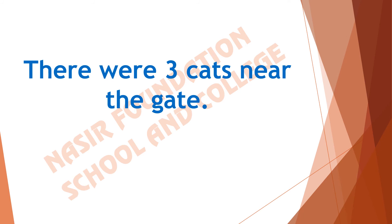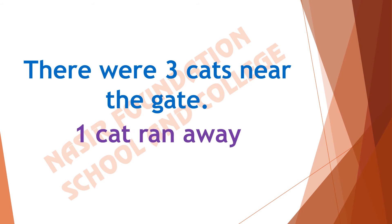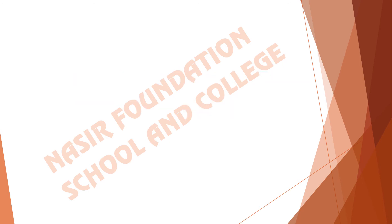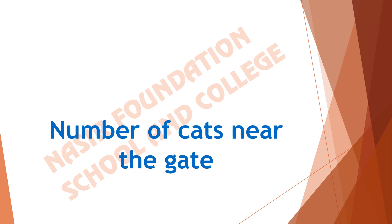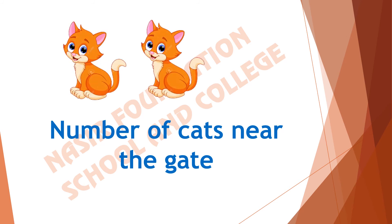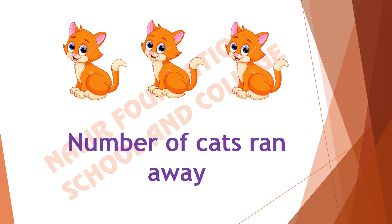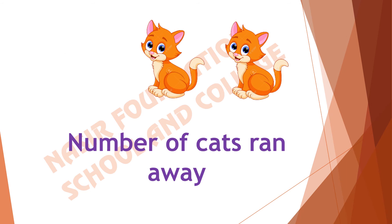Let's take another example. There were three cats near the gate. One cat ran away. How many cats are left near the gate? Do you have any idea how we will find out? We will subtract the number of cats. Number of cats near the gate are one, two, and three. Now we will see how many cats ran away. Only one cat ran away.